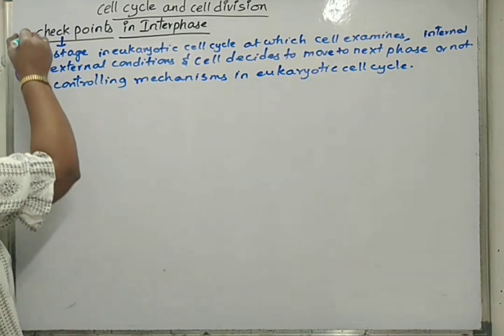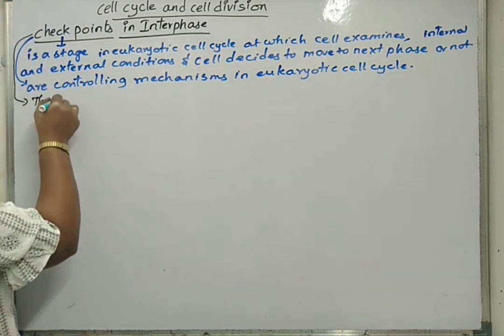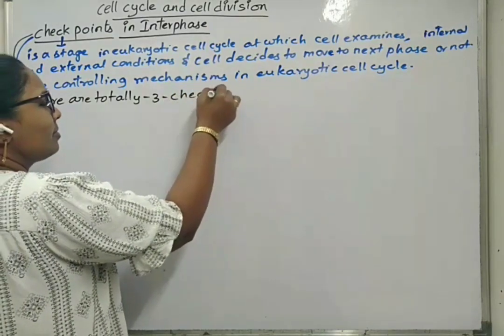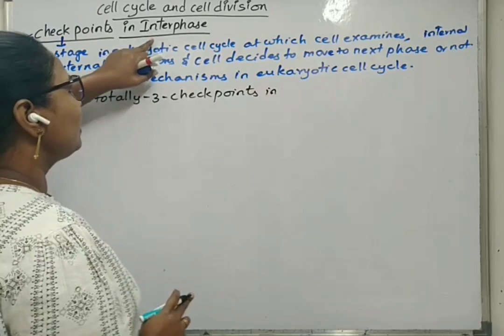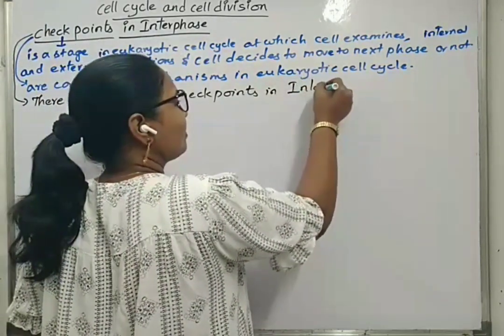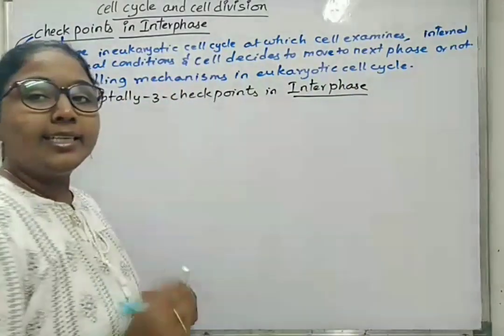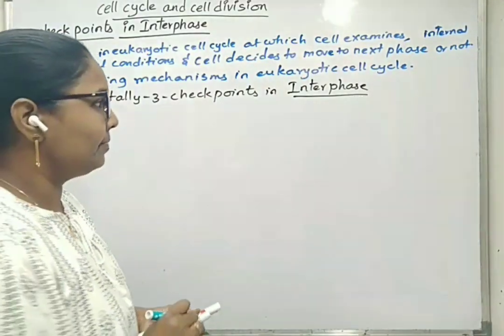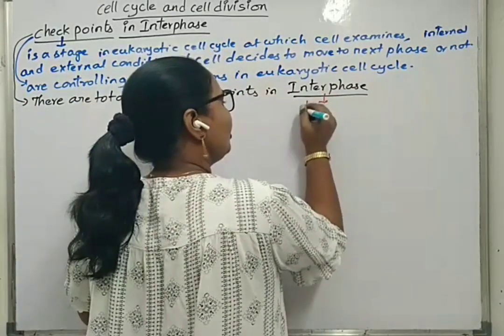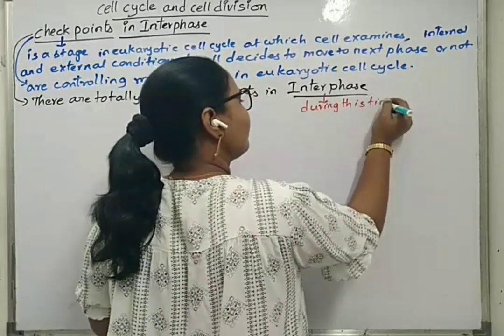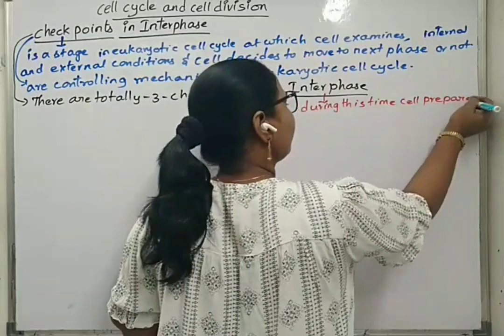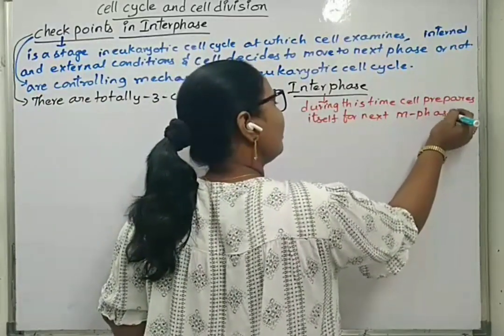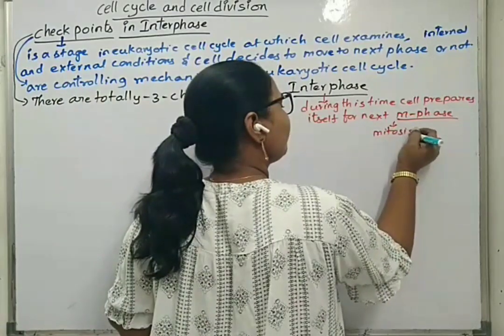We can also say checkpoints are controlling mechanisms in eukaryotic cell cycle. Now, how many checkpoints are there? There are totally three checkpoints in interphase. We know that interphase is the time period when cell is preparing itself for either mitotic division or meiotic division.